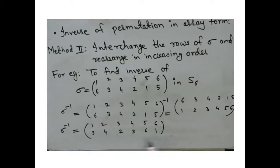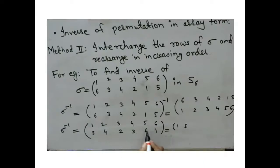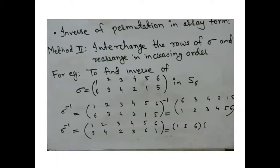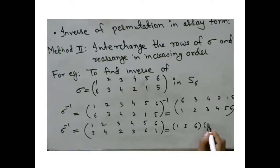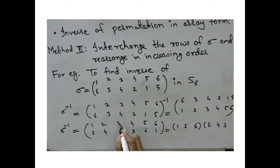If we find the cyclic notation of this permutation, we see that 1 maps to 5, 5 maps to 6, and 6 maps back to 1; then 2 maps to 4, 4 maps to 3, and 3 maps to 2. This is the same permutation we obtained using Method 1, confirming both methods give the same result.